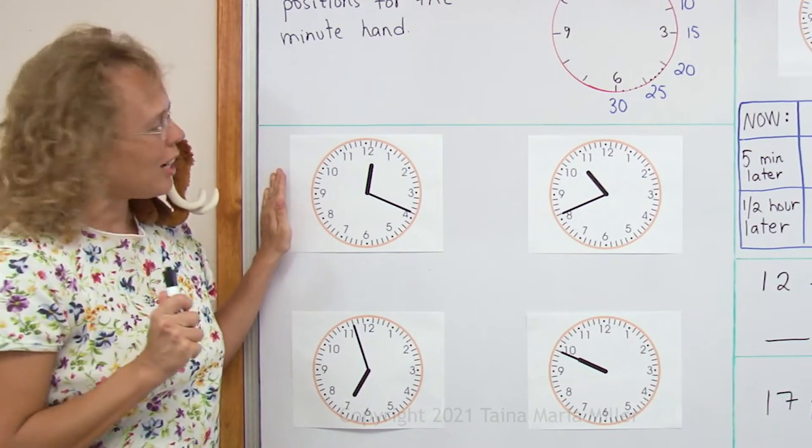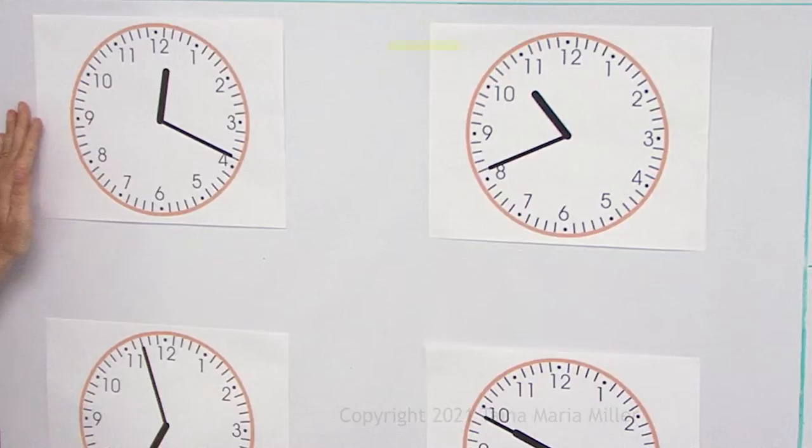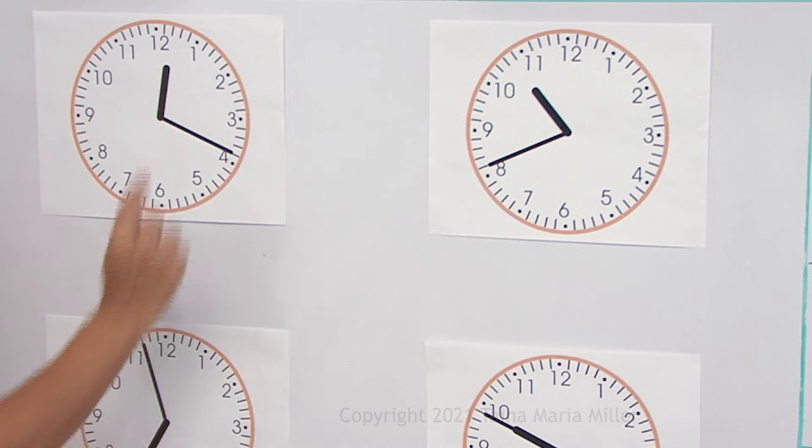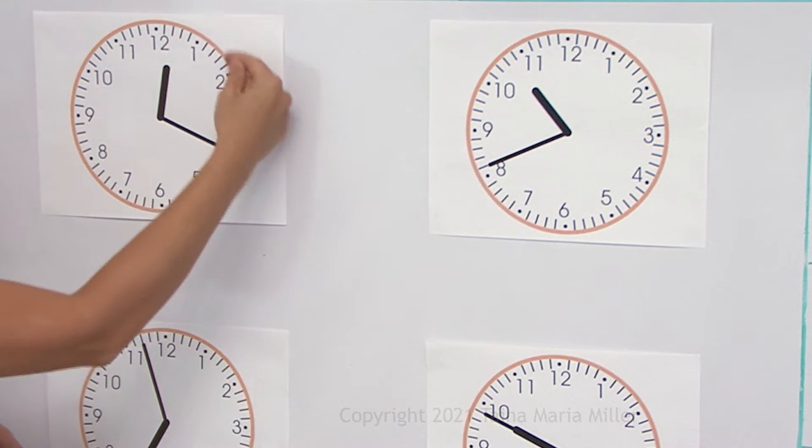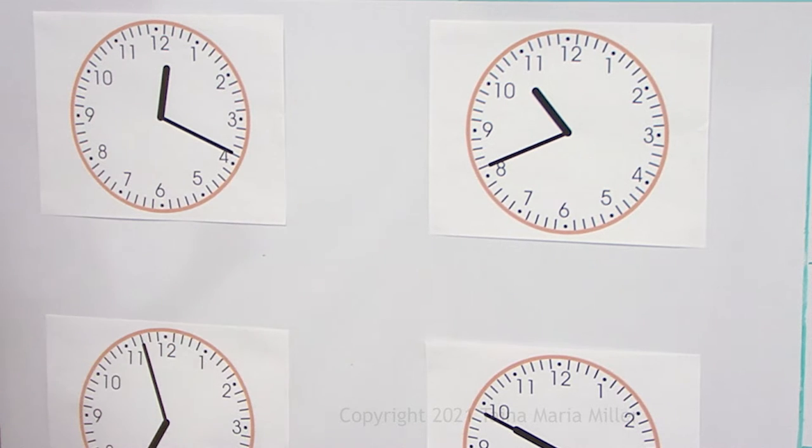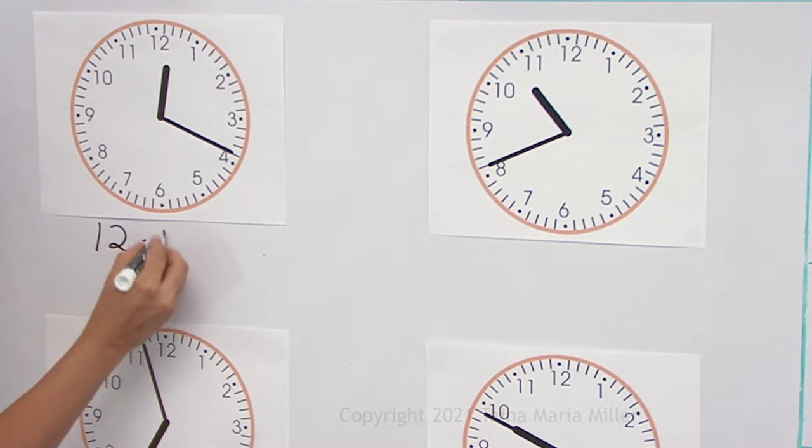Now try to tell me what time it is on this clock. The minute hand numbers are not there anymore, but you should remember them, right? The minute hand numbers go, here's 5, 10, 15, and then 4 more. So we get 19 minutes. 12 hours and 19 minutes.